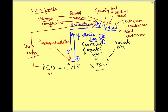Now what about afterload? Afterload actually decreases stroke volume by decreasing the shortening of the muscle fiber. So it is at this level that afterload acts, and this is also incorporated in the equation itself because afterload is affecting the stroke volume.